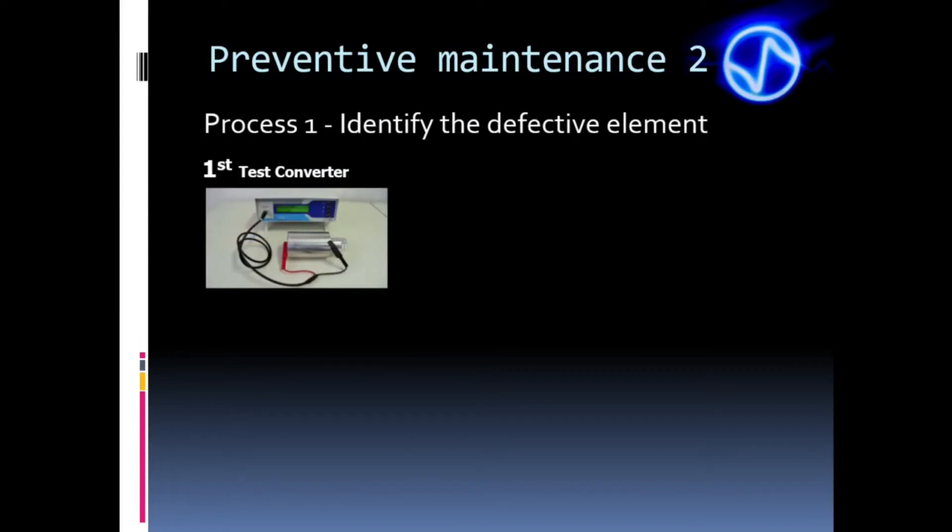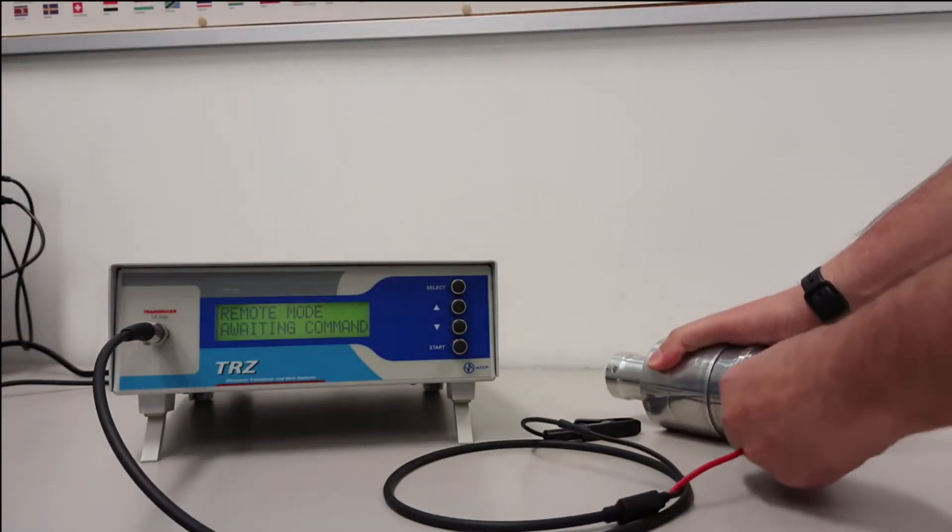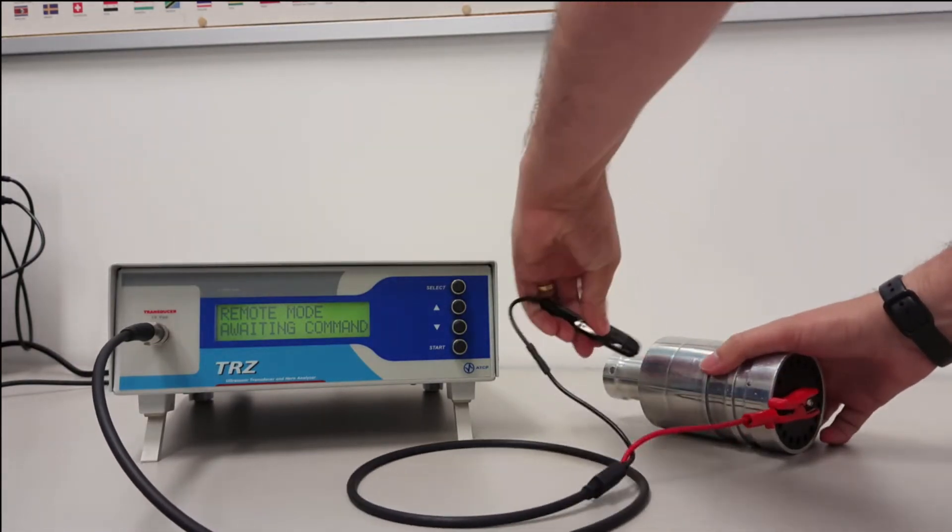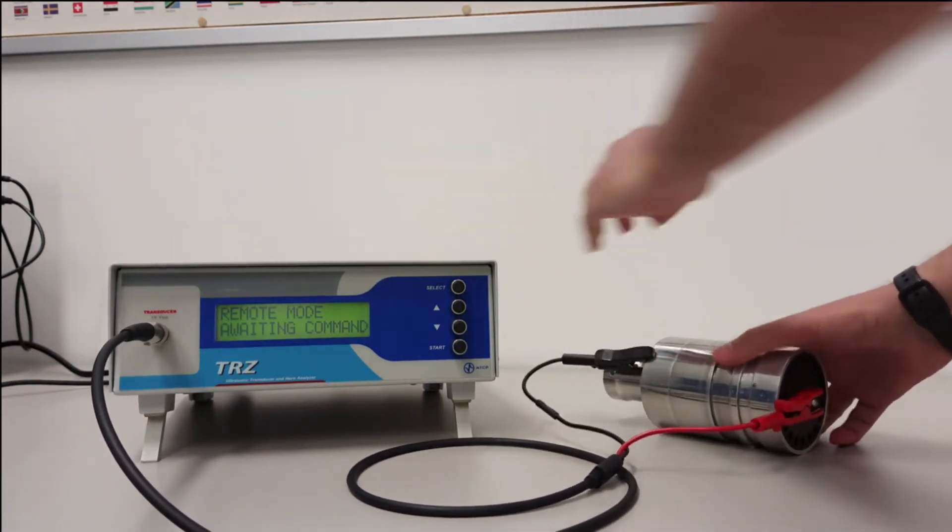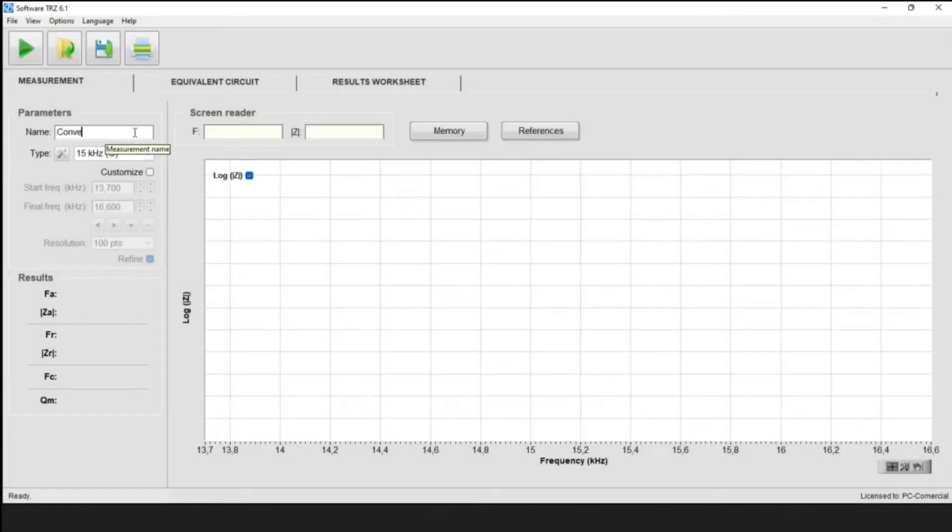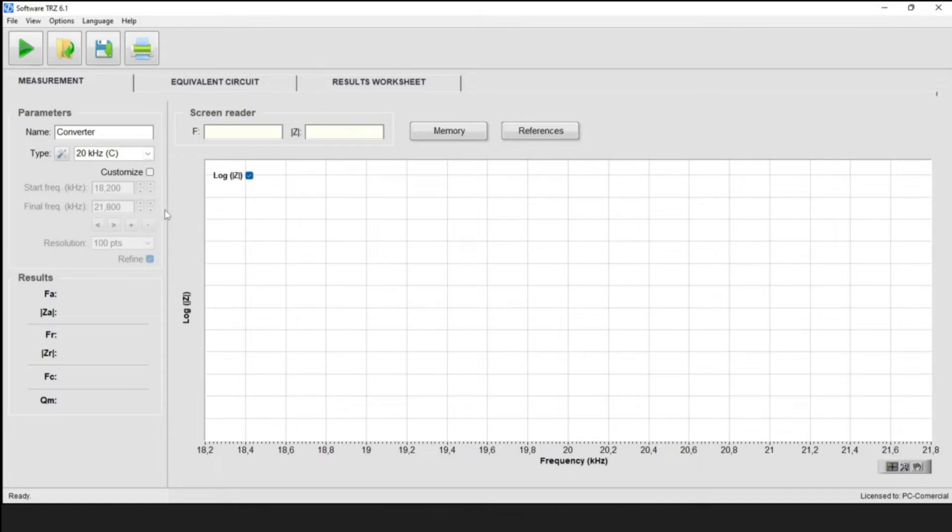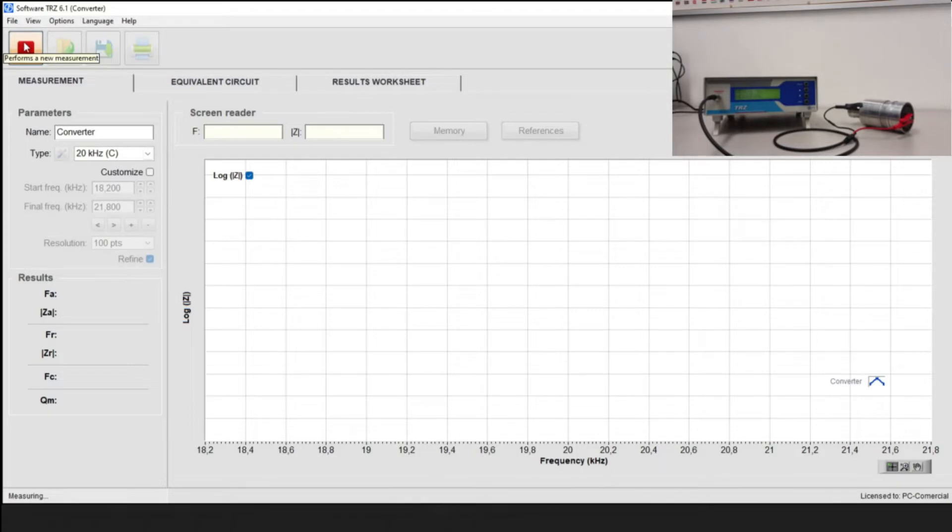Preventive maintenance 2 starts with the identification of the defective element. The first step is to test the converter alone using TRZ analyzer. For this, we connect the red alligator clip to the positive pole of the transducer and the black clip to the negative or housing. Then select in the software the operating frequency of the machine followed by the letter C in brackets, meaning the converter is alone. Finally, press the play button to measure.